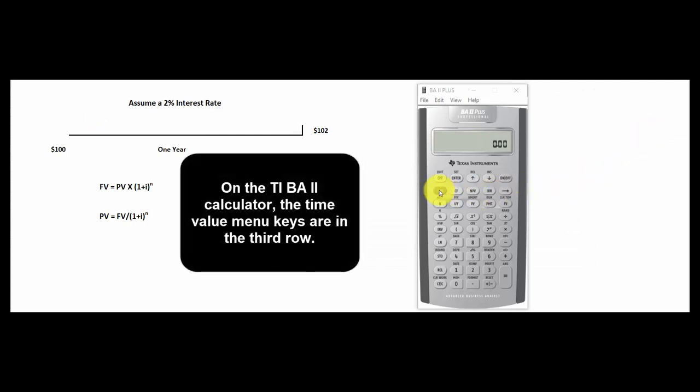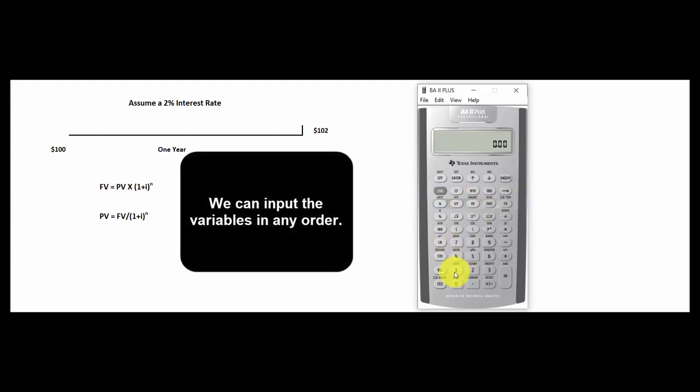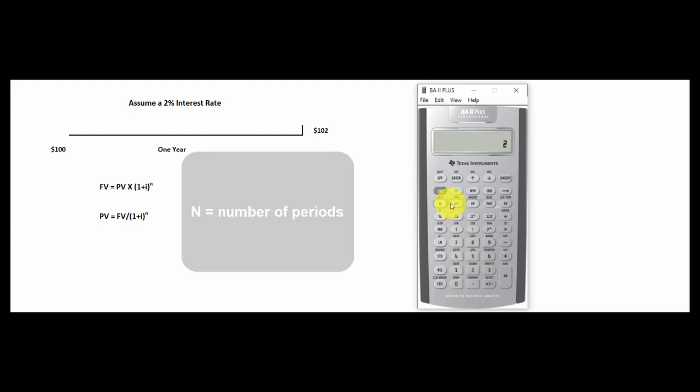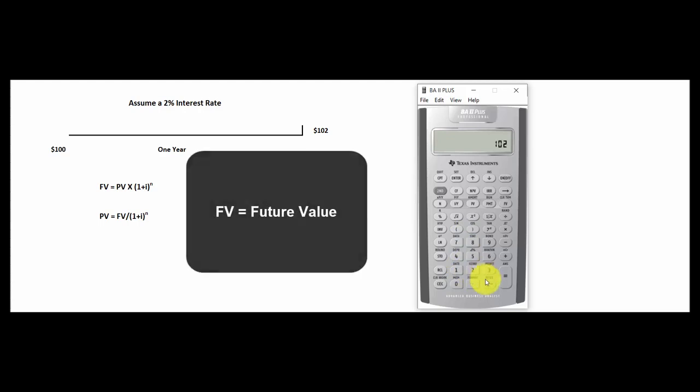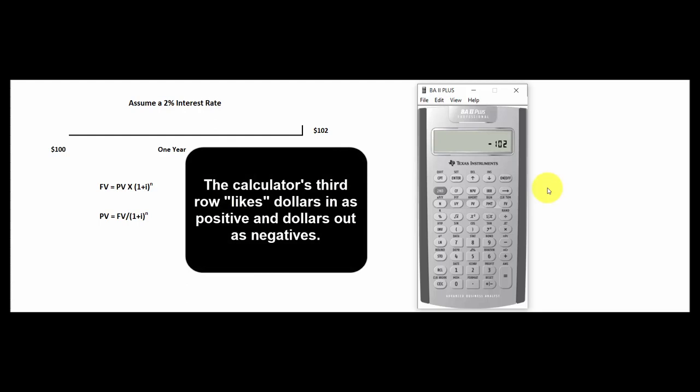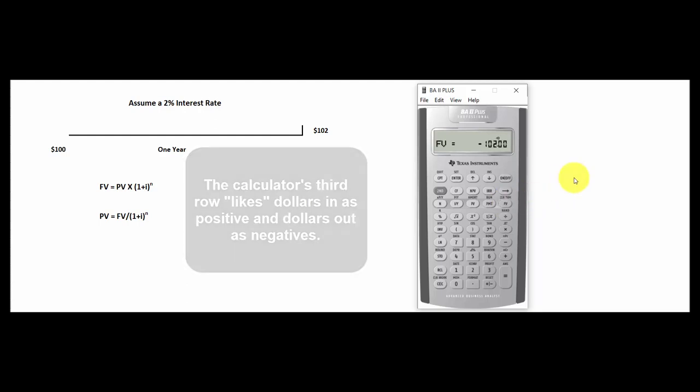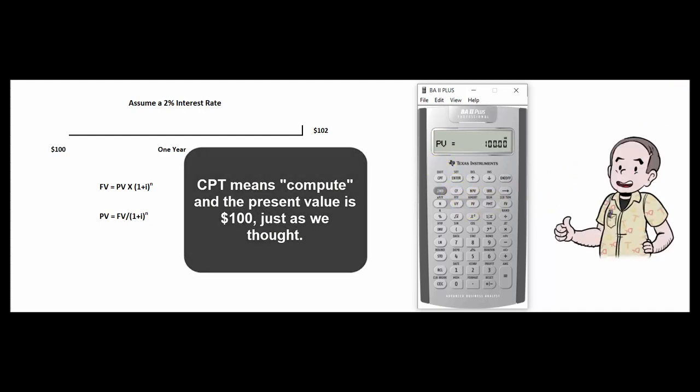We can also use the financial calculator to find the present value. We'll hit 2nd FV to clear out the memory in our third row. n is 1. We can put these in any order by the way. Let's input them from left to right: 1n, what's the interest rate? 2. And what's the future value? 102. Let's change the sign on it because the financial calculator has a convention. If you put in positive numbers, it'll shoot you out a negative number. If you put in a negative number, it'll shoot out a positive number. That's compute PV and sure enough there's our $100.